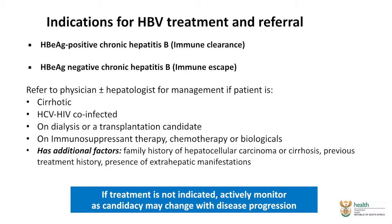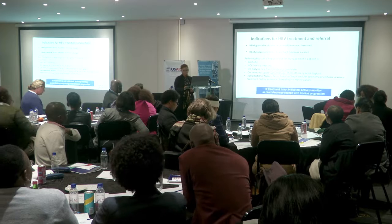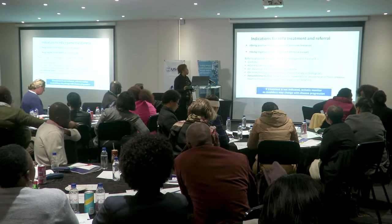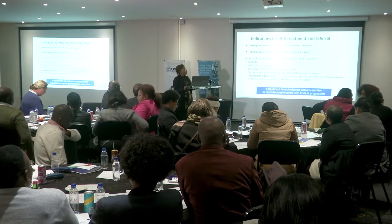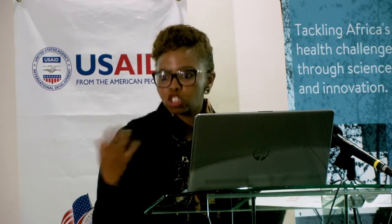Hepatitis B treatment and referral is indicated for hepatitis E antigen-positive patients confirmed to be in the chronic immune clearance phase, and for hepatitis E antigen-negative chronic patients called immune escape patients. Referral to a physician or hepatologist is needed for hepatitis C and HIV co-infected patients, patients on dialysis or transplantation, patients on immunosuppressant therapy or chemotherapy, and those with additional factors such as a family history of hepatocellular carcinoma or cirrhosis, previous treatment history, or extra-hepatic manifestations. If treatment is not indicated, the patient must continue to be monitored, because that status can change at any stage.